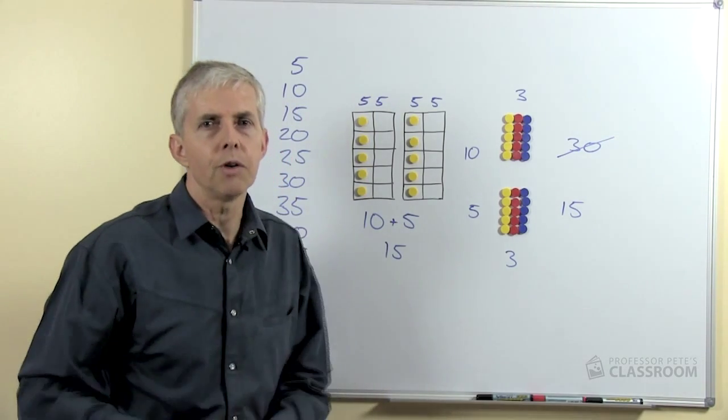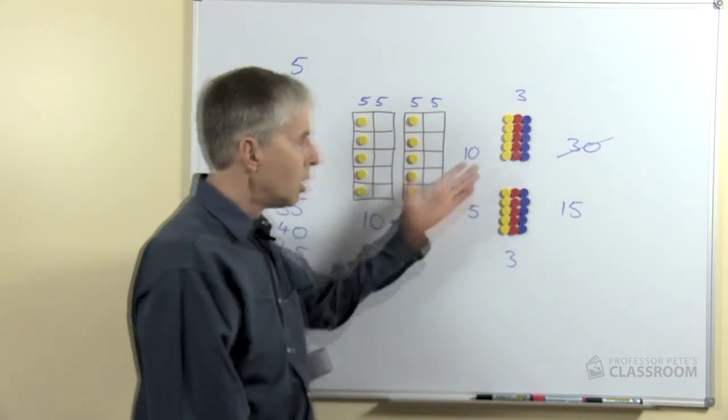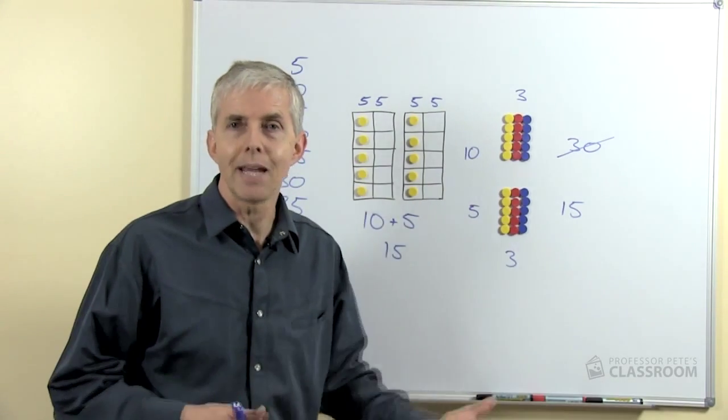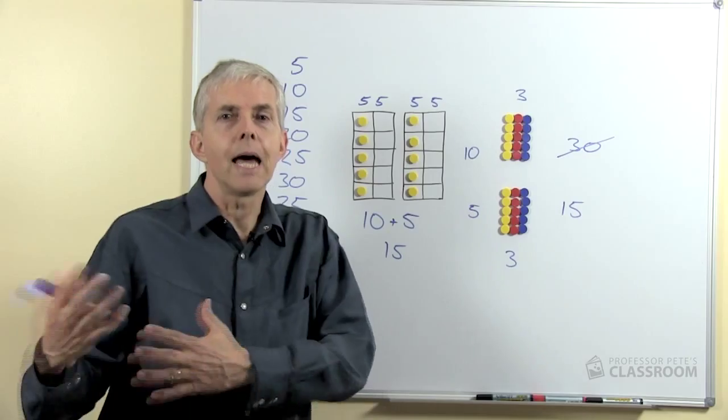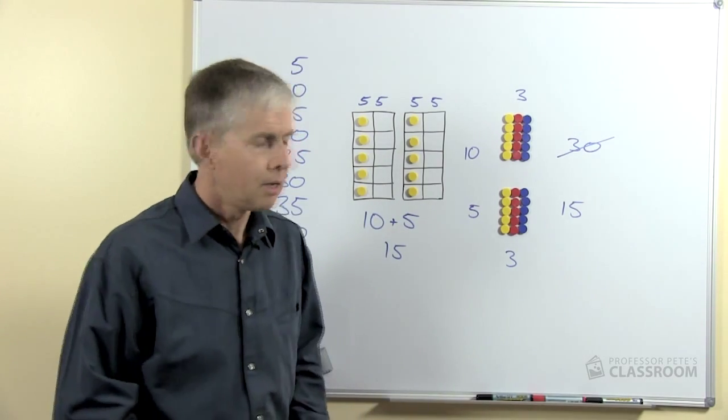So another neat way of helping students remember their 5 times number facts is to say, well what would that number multiplied by 10 be? So if you had 8 5's, what's 8 tens and then what's half of 80? And that makes 40.